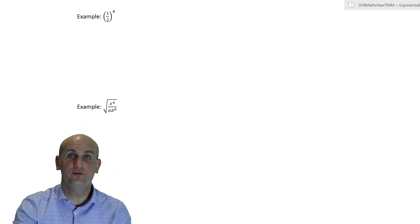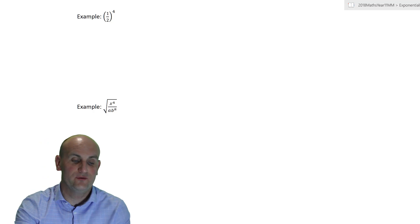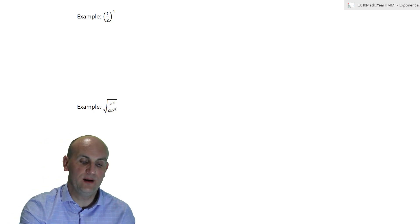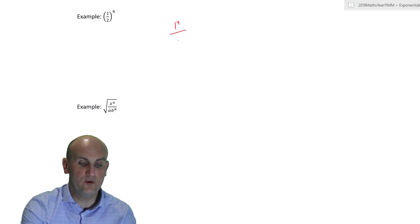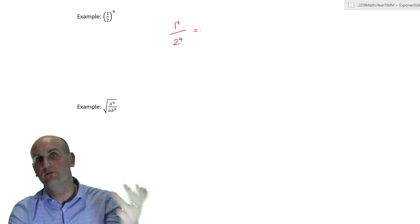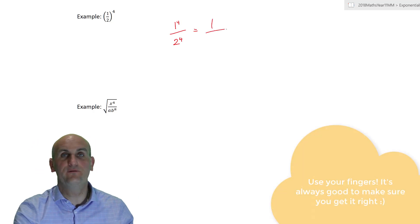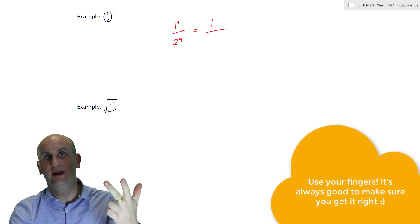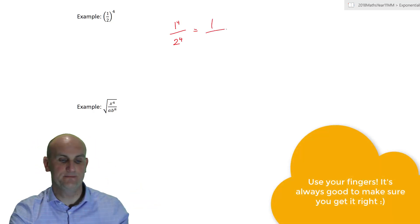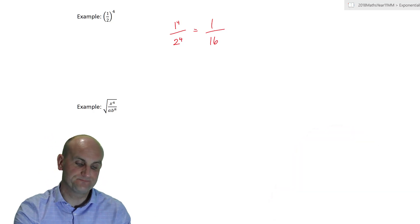And this works with numbers too — don't think it only works with letters. One half to the power of four: that's one to the power of four divided by two to the power of four. One to the power of four is one, and two to the power of four is 2, 4, 8, 16. So the answer is one sixteenth.